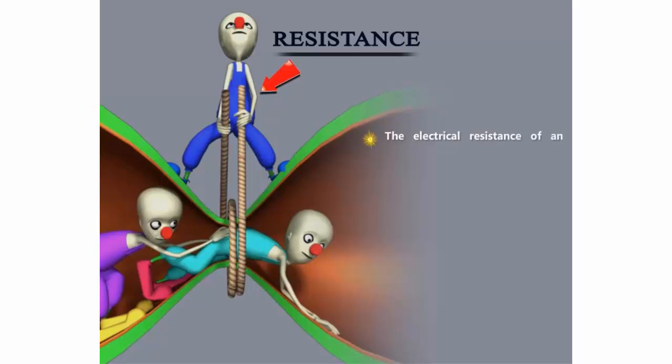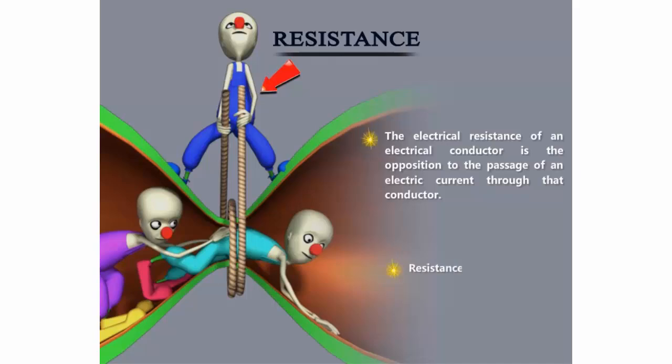The electrical resistance of an electrical conductor is the opposition to the passage of electric current through that conductor. Resistance is measured in ohms.